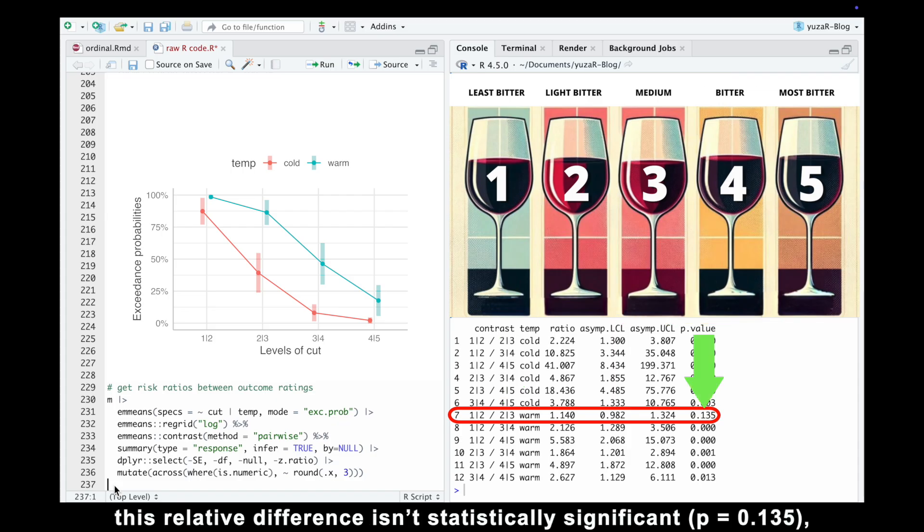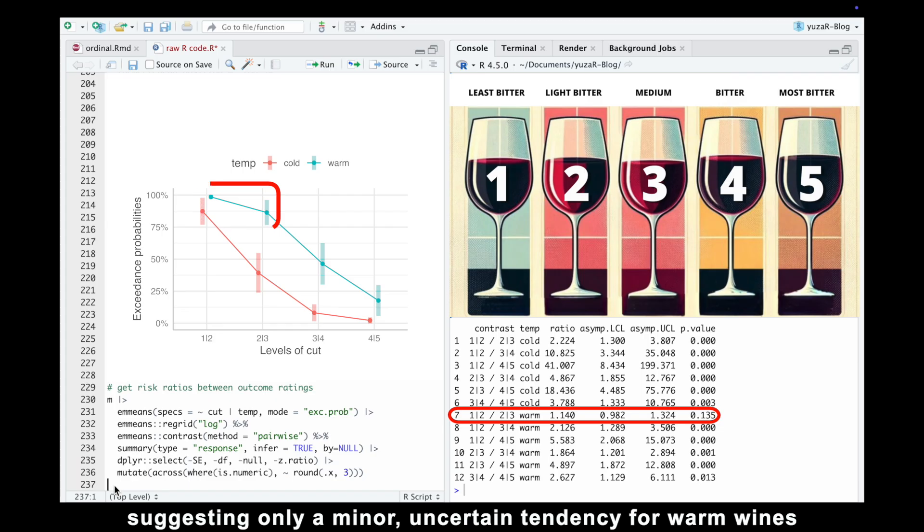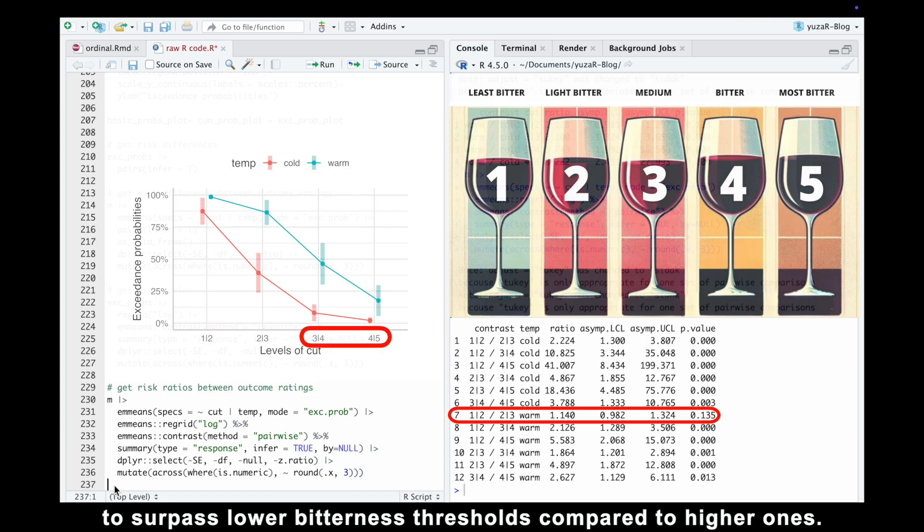However, this relative difference isn't statistically significant, suggesting only a minor, uncertain tendency for warm wines to surpass lower bitterness thresholds compared to higher ones.